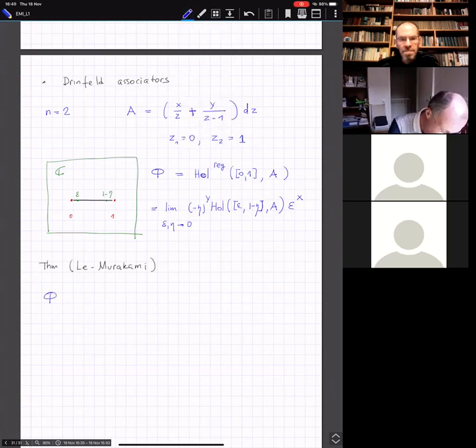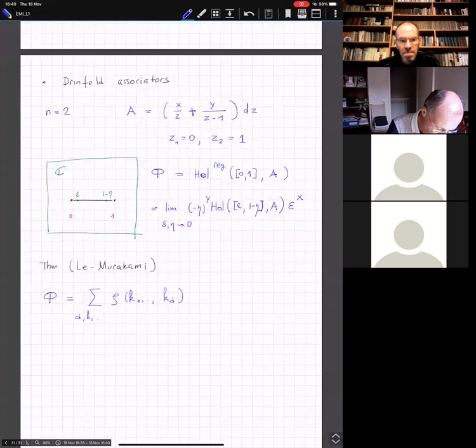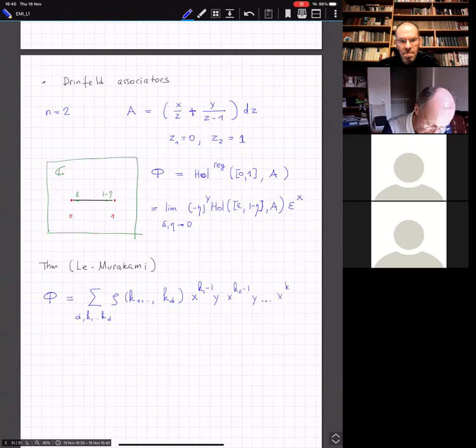And here will be an expression x to the power k1 minus 1, y, x to the power k2 minus 1, y, and then up to kd minus 1, y, plus dots. I will explain what those dots are. First of all, what are those zeta k1, kd? These are those MZVs, multiple zeta values. These are sums n1 bigger than n2 bigger than nd, 1 over n1^k1, nd^kd. For convergence, you need to assume that k1 is at least 2.